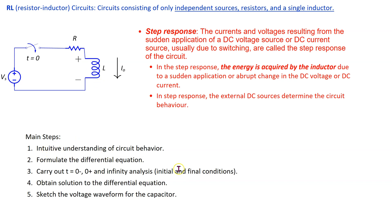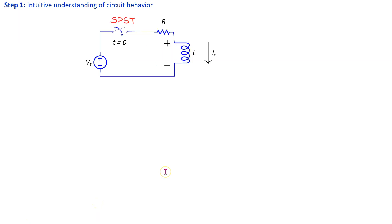The main steps in analyzing the step response of an RL circuit are shown here. The first step is to understand what is happening in the circuit. It comprises an independent voltage source of magnitude Vs, a single-pole single-throw switch that closes at T equals 0, a resistor, and an inductor. We assume a non-zero initial current I0 in the inductor, so the inductor has some initial stored energy when the switch closes. Once closed, the independent voltage source determines the final stored energy in the inductor.